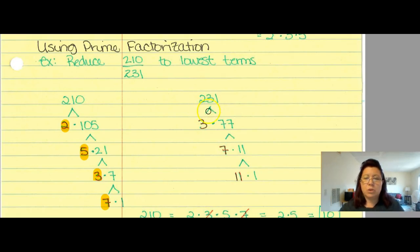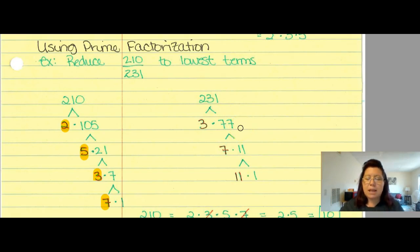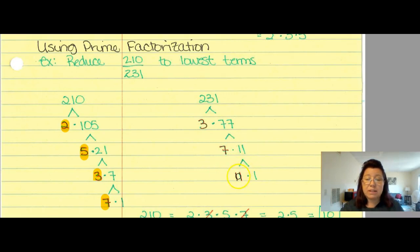231 divided by 3 is 77. 3 times 77 gets me 231. Is 77 prime? No, it's not. I can break it down into 7 times 11. I like all my primes on the left, so I'll break 11 into 11 times 1. So 231 is 3 times 7 times 11.